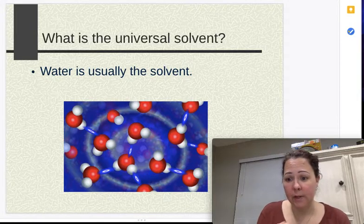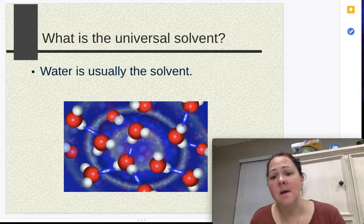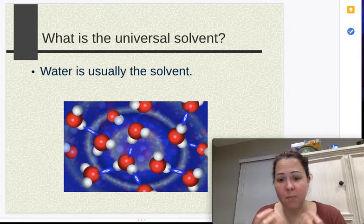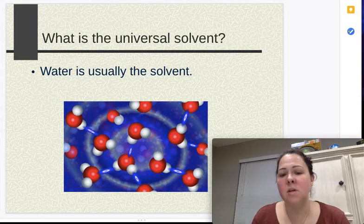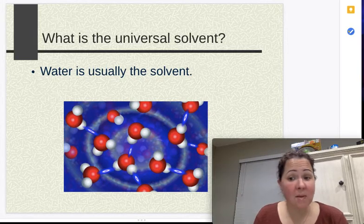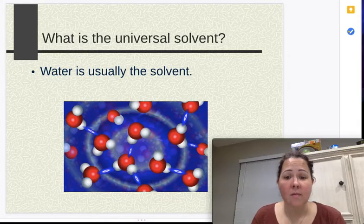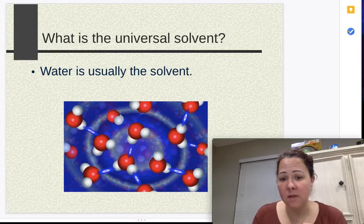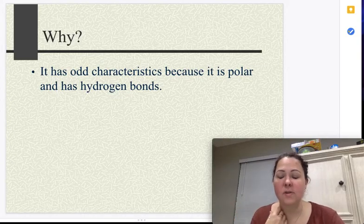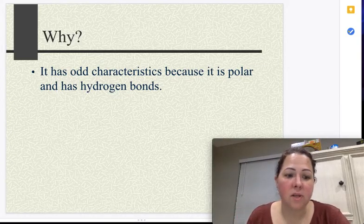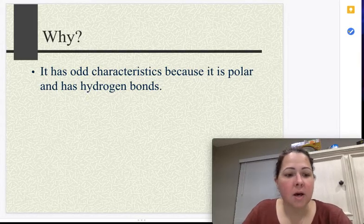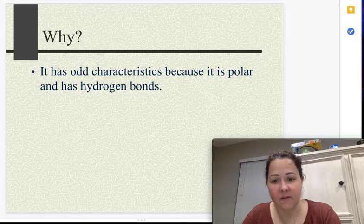So because of its polarity, because of those hydrogen bonds, water ends up breaking apart many other things. So it's considered to be the universal solvent. And that just means that it breaks apart many, many, many different things. So it will turn a lot of things into solutes. Because of its odd characteristics, it's going to be considered the solvent 95% of the time. Very few times is it not actually considered to be the solvent.